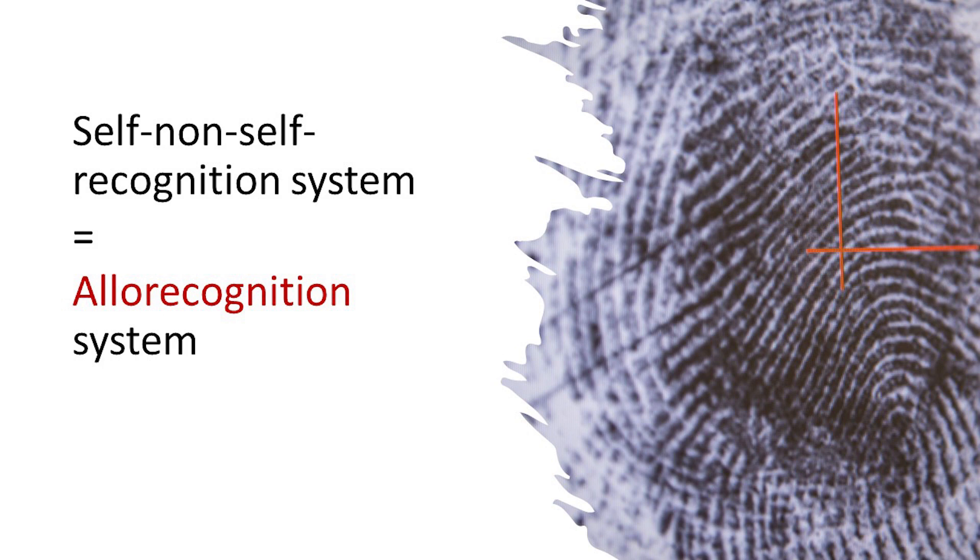Organisms in all kingdoms of life have developed mechanisms for distinguishing self from non-self. This recognition phenomenon, also known as alorecognition, is critical for survival and functioning of all life systems. It's important that organisms can react against foreign agents that can be parasitic or may cause any other type of harm.